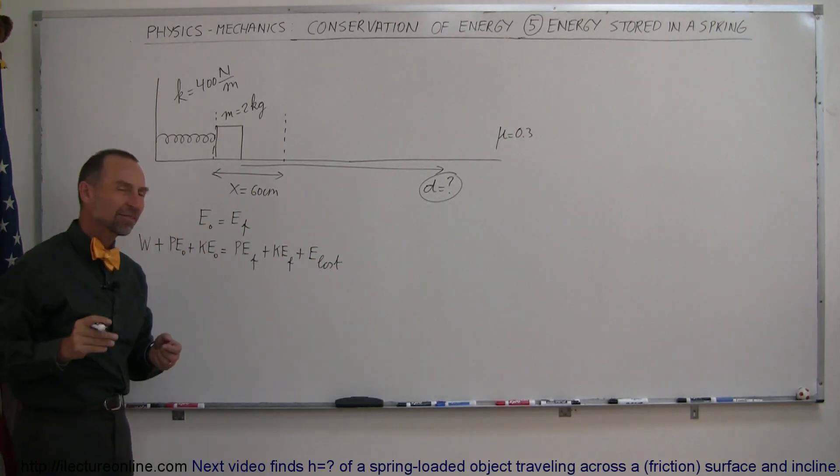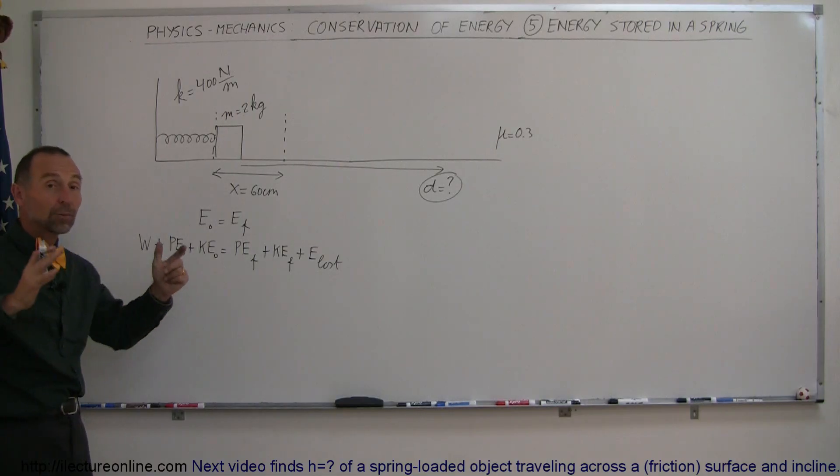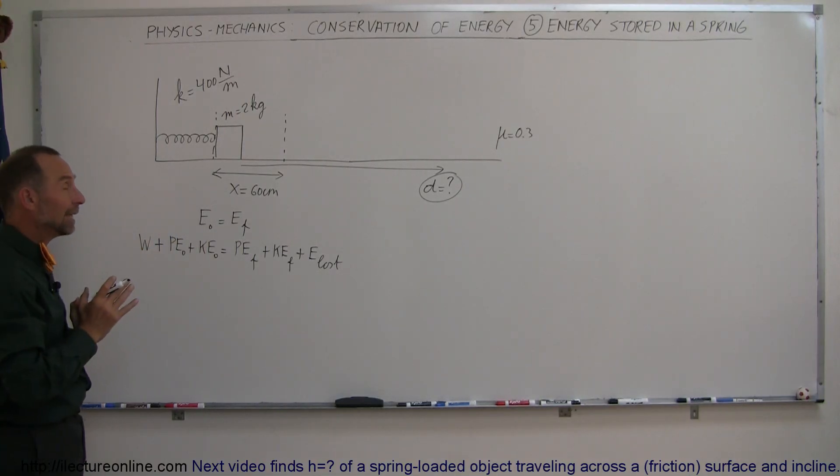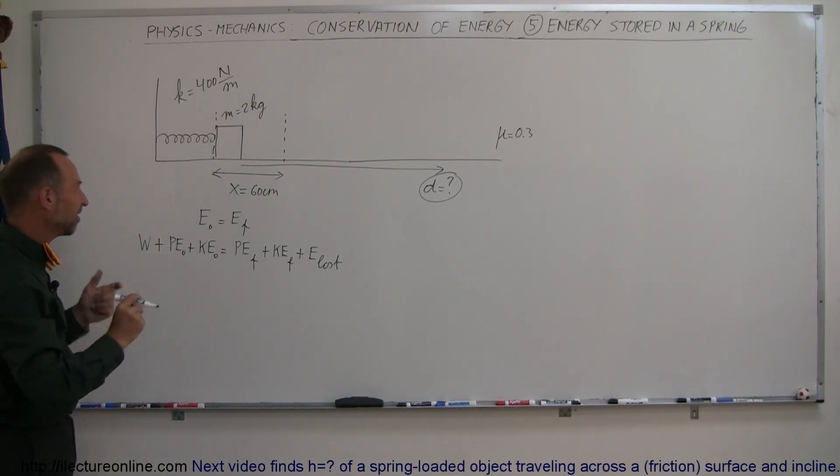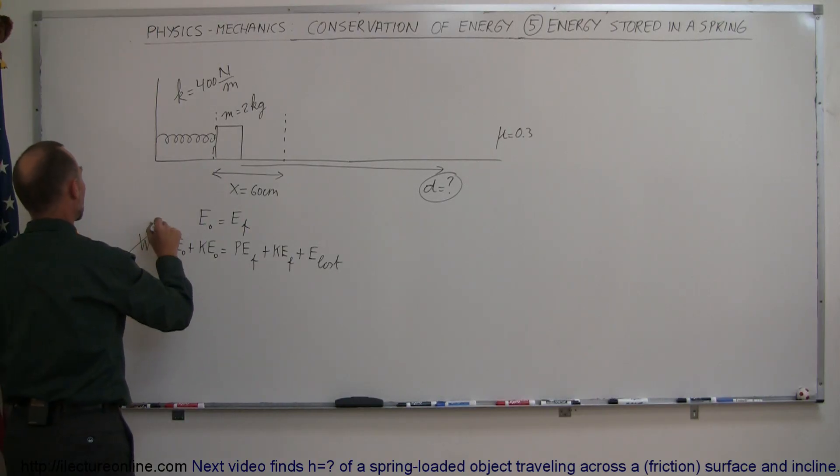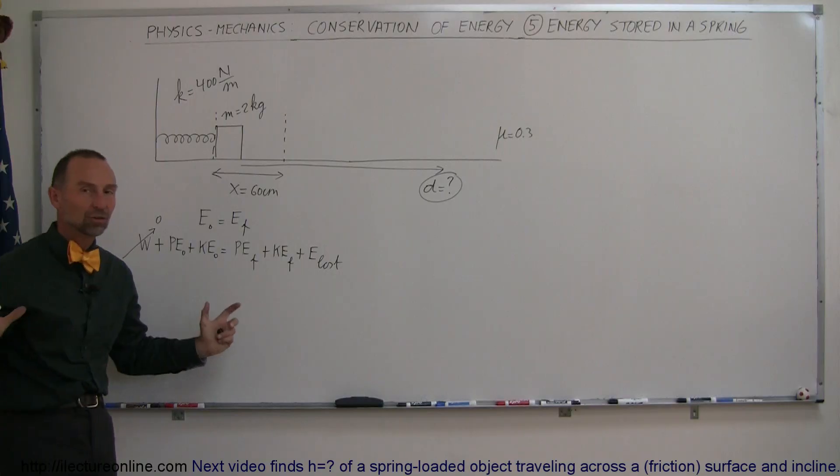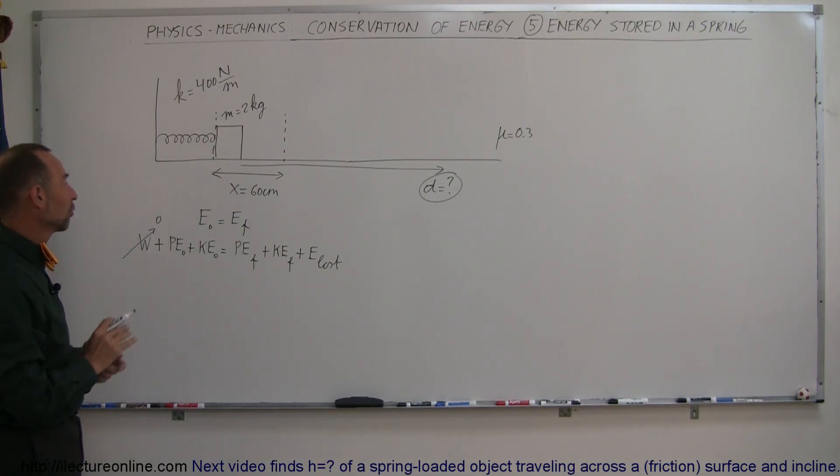Now you may say there's work done because we have to compress the spring. Well, either you account for it by the work done to compress the spring, or account for it by the energy already stored in the spring. In this case, we could say the work was done prior to the problem starting—energy was already stored in the spring—so we don't have to worry about that.